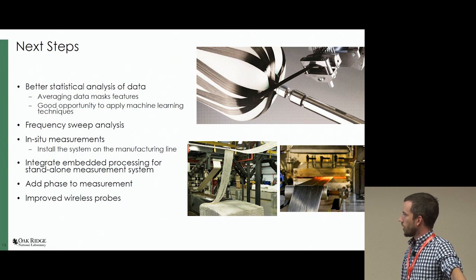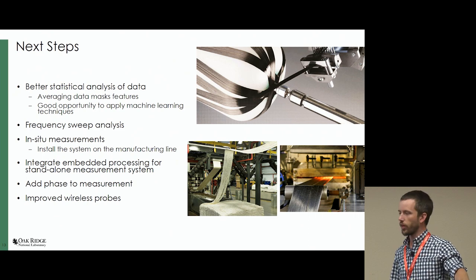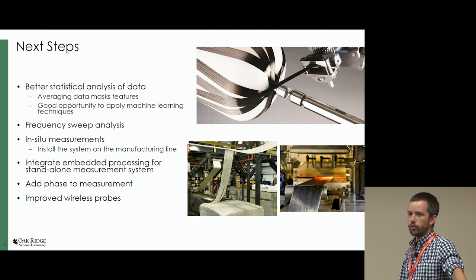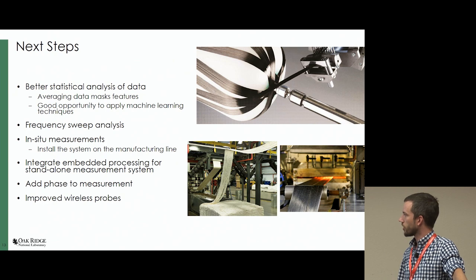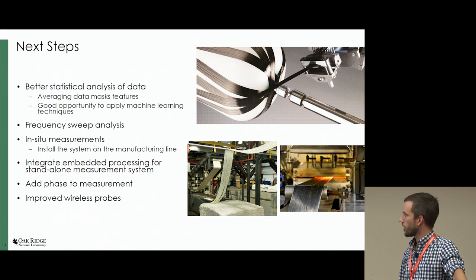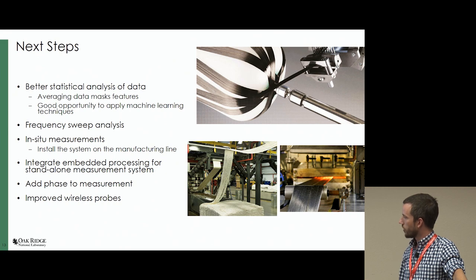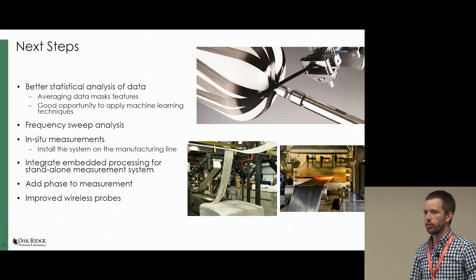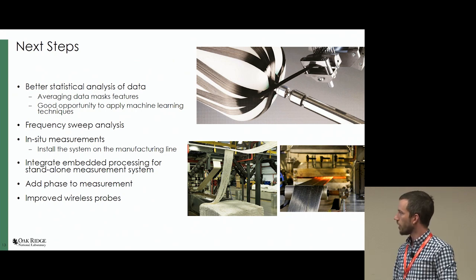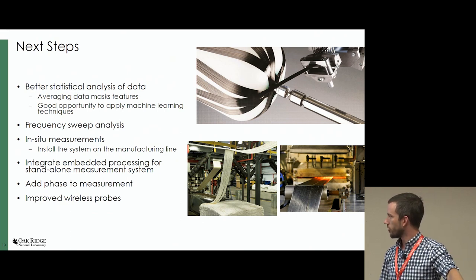The next steps for this project include better statistical analysis of the data. Right now, we're averaging these sweeps in the 5 to 6 gigahertz range, but that may be masking some spectral features of the toe. It's probably a good opportunity to apply machine learning techniques — maybe we can find some separation or clustering of the data that makes sense. A frequency sweep analysis, and another interesting part will be in-situ measurements, so actually installing it on the production line. Probably phase measurements and reflection as well — there could be something hiding there. We have a little bit of additional funding to look at these next steps and hopefully provide more meaningful data to the engineers who work at the CFTF.